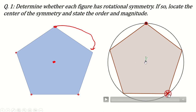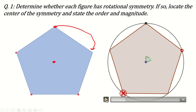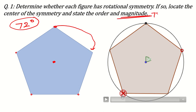The pentagon starts rotating in the clockwise direction. At 72° this point comes back to the same place — the pentagon overlaps with itself for the first time at 72°. So 72° is the magnitude, because the figure first overlaps itself at 72°.